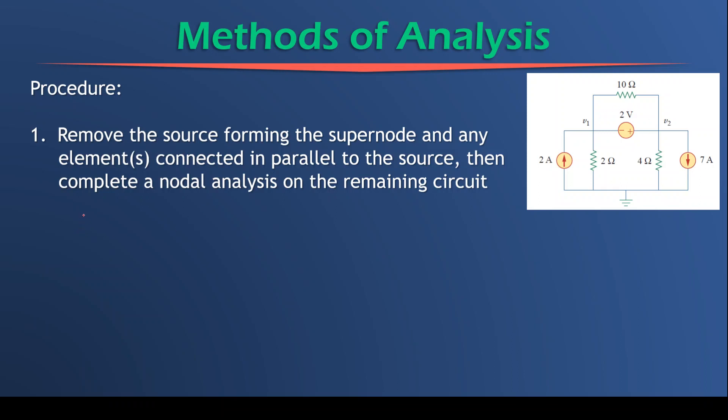the following circuit. So the source and the resistor connected in parallel to the source fall away. And what we have remaining is the current source and the 4 ohm resistor.